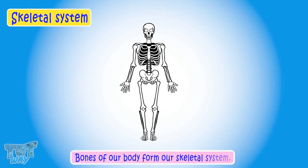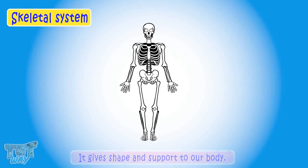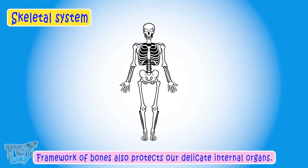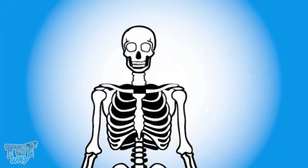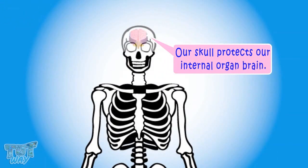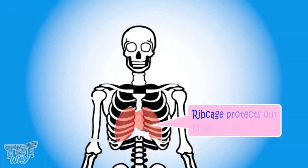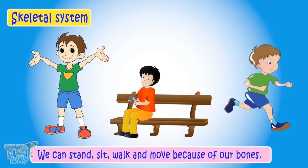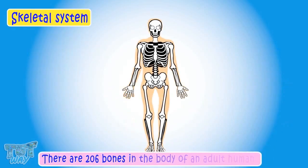The bones of our body form our skeletal system. It gives shape and support to our body. The framework of bones also protects our delicate internal organs. For example, the skull protects our internal organ, the brain, and the rib cage protects our lungs and heart. We can stand, sit, walk, and move because of our bones. There are 206 bones in the body of an adult human.